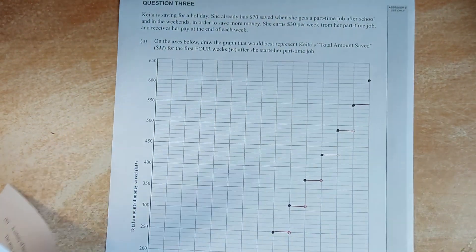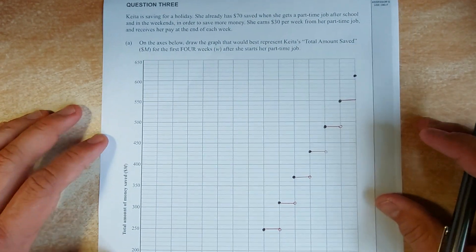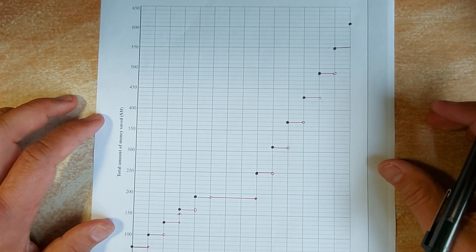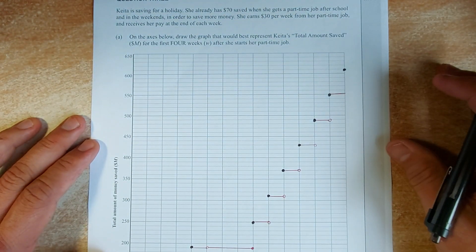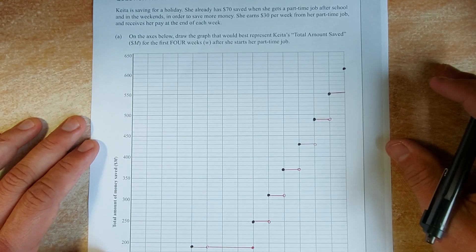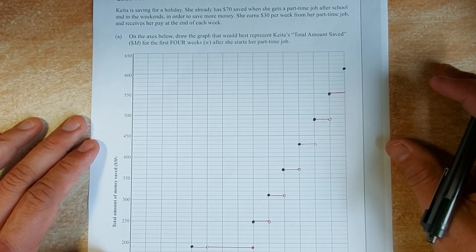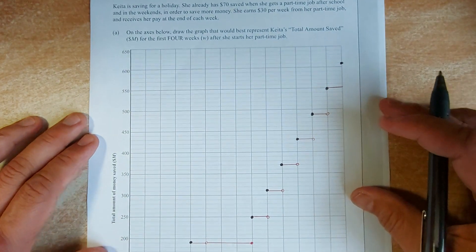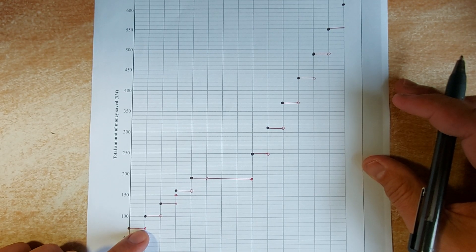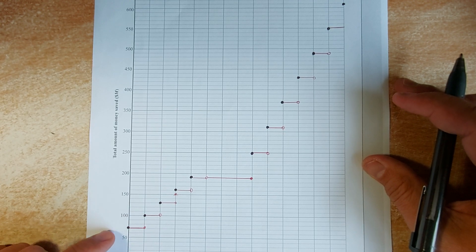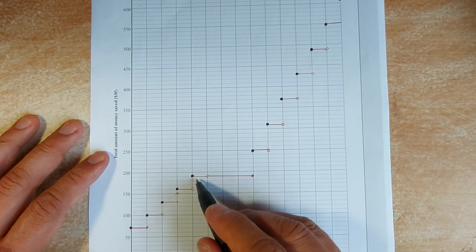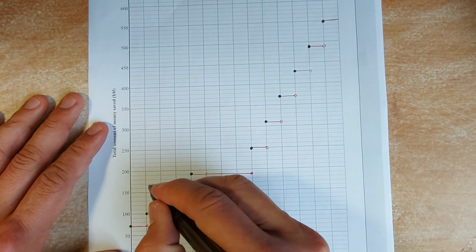Okay, good. We are looking at the last question. The last question is to draw the graph. So, to do that, we have to look at the question again. So, the question says, Kita has $70 saved when you get a part-time job after school, and in the weekend to save some money. She earns $30 per week from a part-time job, and receives her pay at the end of the week. So, you are going to draw the graph. So, at the start, he got $70, and then, at the start of the first week, when she works, she is going to get additional $30. So, you are going to jump $30, and jump $30 for 4 different weeks, and it will end over here. If you can draw that, that is an achieved.